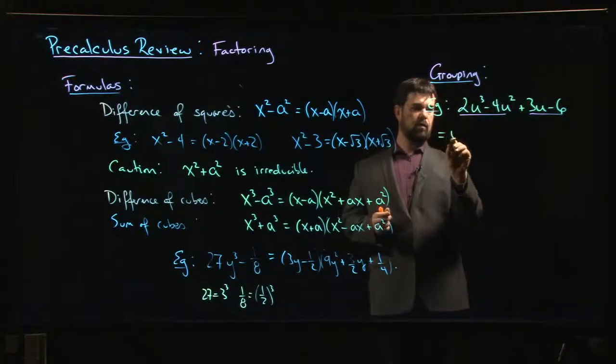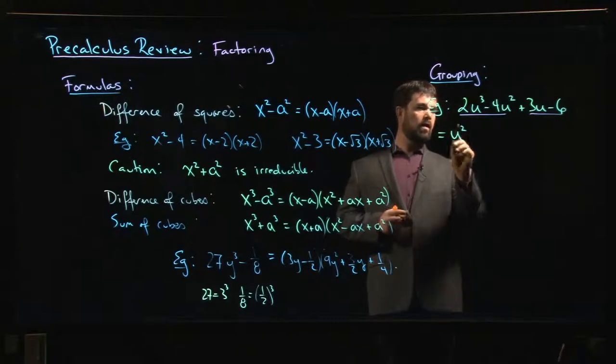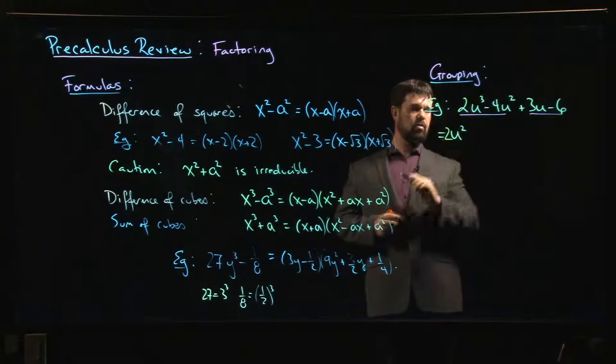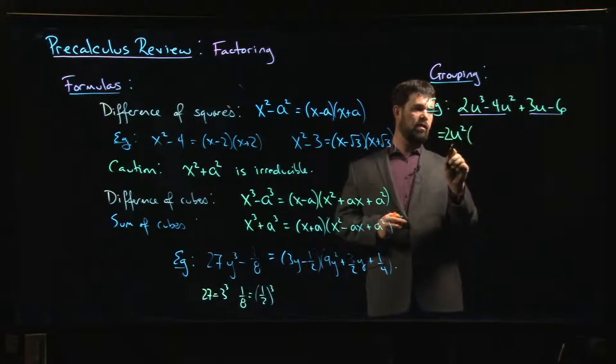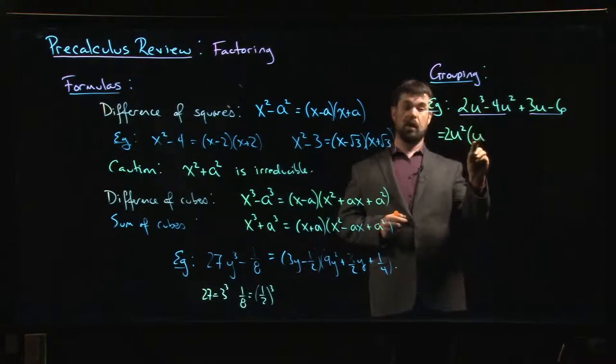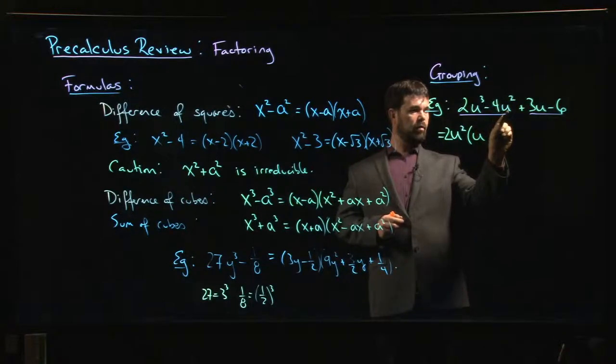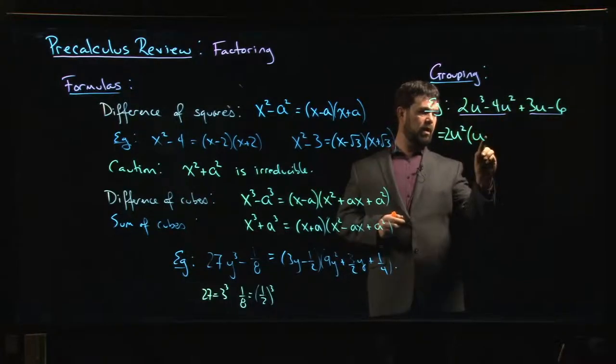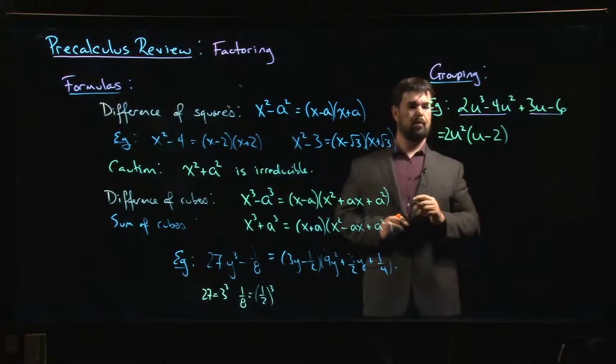So you say okay in those first two terms if I factor a u squared, in fact I even factor out a 2u squared - there's a 2 that's common to both. So I factored a 2u squared and I'm left with, well here to get 2u cubed I have to take 2u squared and multiply by u, and here for 4u squared, I've got 2u squared, I have to multiply by minus 2 to get minus 4u squared.